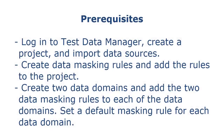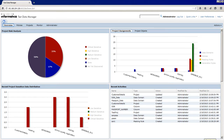Before you begin, perform the following prerequisite tasks. Login to Test Data Manager. Create a project and import data sources. Create data masking rules and add the rules to the project. Create two data domains and add the two data masking rules to each of the data domains. Set a default masking rule for each data domain. In this demo, we will manually assign the data domains to the columns and then assign the default masking rules to columns that have data domain assignments.